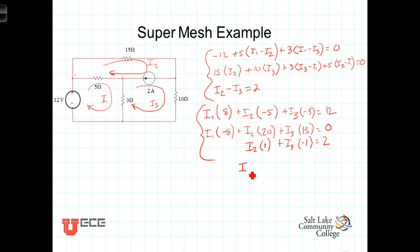I1 is equal to 2.03 amps, I2 is equal to 1.28 amps, and I3 is equal to negative 0.72 amps.